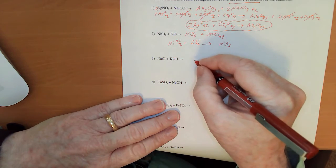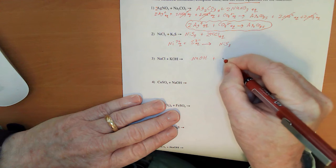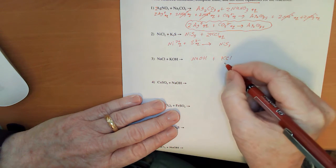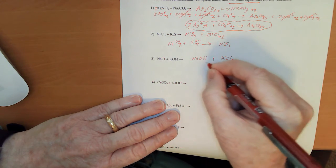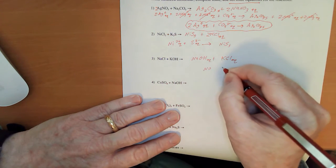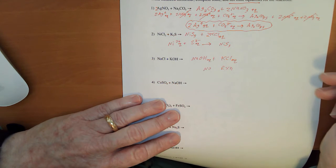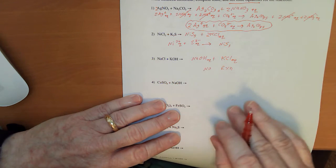Partner exchange for number 3, NaOH plus KCl. Now, you know what? These are both aqueous, because they both have group 1 metals in them. So, no reaction here. RXN, our nice abbreviation for reaction.